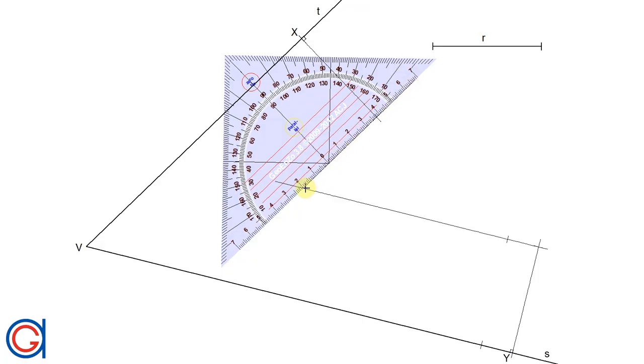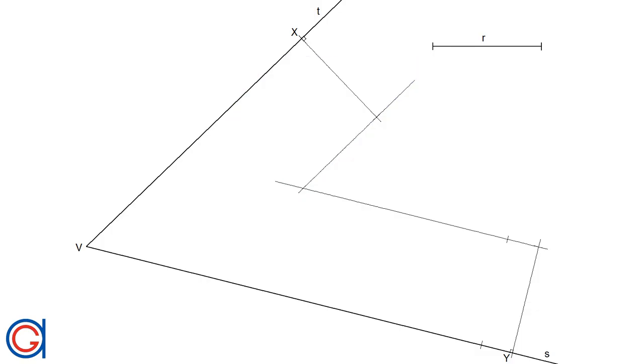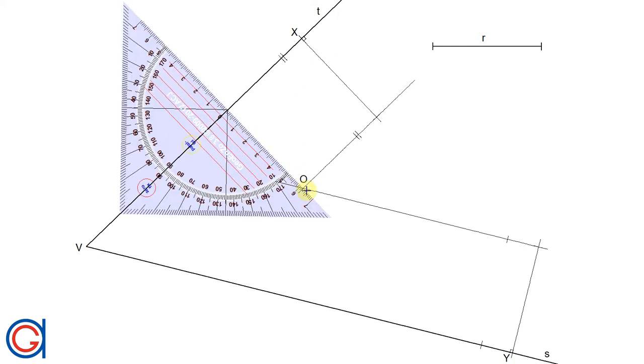And where these two new lines intersect, we will call a new point O. This point O is going to be the center point of the arc that we want to draw.